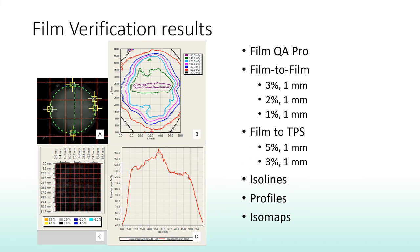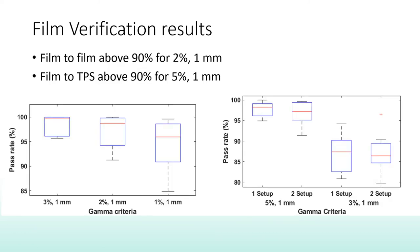Film analysis was done with FilmQA Pro. We used a 1 mm distance-to-agreement criteria, since that is our margin, and up to 5% for the TPS dose comparison. We also qualitatively evaluated the profiles, isomaps, and isodose plans. The film-to-film gamma analysis results are all above 90% for 2% and 1 mm, and film-to-TPS dose above 90% for 5% and 1 mm.